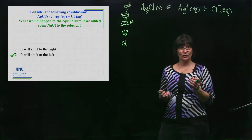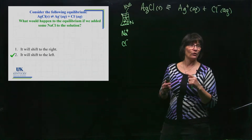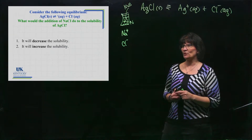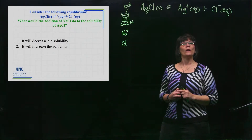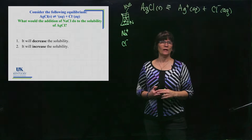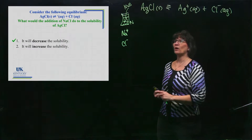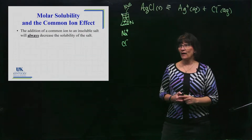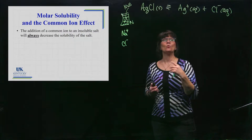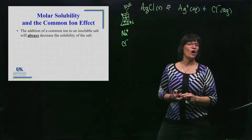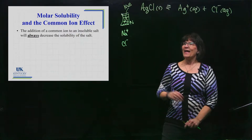Adding one of these ions — according to Le Chatelier's principle — pushes the equilibrium to the left. Now let's think about that in terms of the language we use for insoluble salts. If we're pushing this equilibrium to the left, does the addition of sodium chloride decrease or increase the solubility of silver chloride? If you're pushing it to the left, it is going to decrease the solubility. This is what common ions always do.